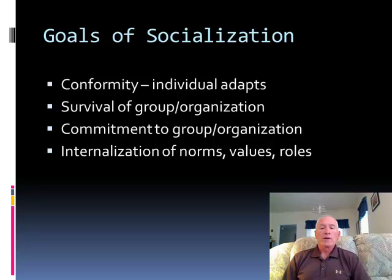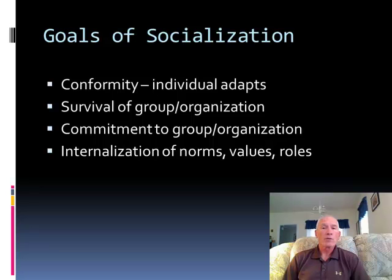One of the goals of socialization is that we internalize the norms, values, and roles. Over a period of time, we tend to become very much like the other group members. We begin to accept the norms of the group — not only accept them, but come to believe that they're appropriate. We soon come to adopt the values if they were different from ours. The attraction-selection-attrition framework plays a role here; typically we will already possess those values or believe those values to be ours, or they will be close enough that a shift is not problematic.